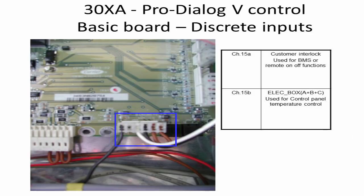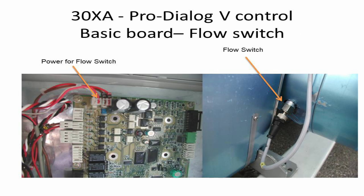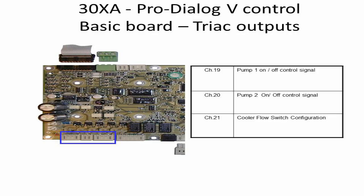Channel 15A is used for BMS connection. Channel 15B is used for the electrical box temperature sensor. The flow switch connection on the main baseboard is shown using the pointer, along with the physical installed location on the chiller. The table also shows pump control and cooler flow switch configuration with their respective connection channels on the baseboard.